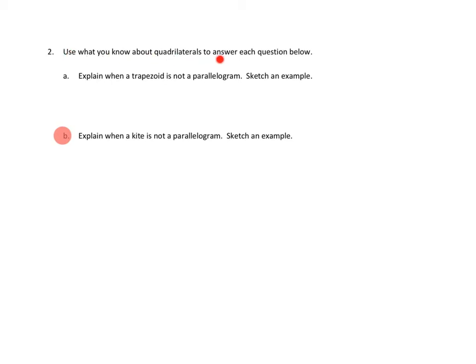Problem number two says, use what you know about quadrilaterals to answer each question below. And we're going to skip one and answer 2B. Explain when a kite is not a parallelogram and sketch an example. Now what I remember about the kite is that the adjacent sides are of equal length.